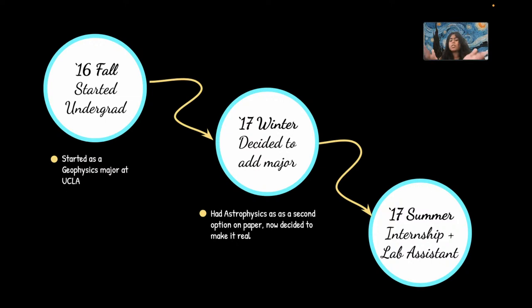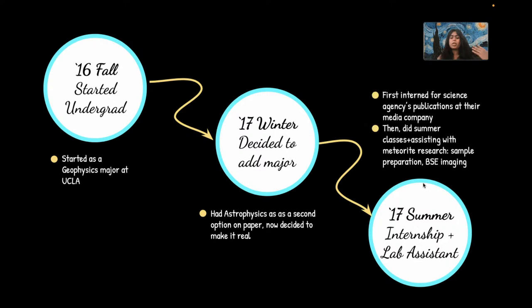In that term I added the major and started taking extra classes. The following summer I did an internship as a lab assistant — and importantly, it was not research-related at all. It's not mandatory that everything you do as an undergrad be research-based; you can pick up needed skills from somewhere totally different. I interned for a science publication, looking for new stories, interviewing people, and helping plan an event — I was getting communication and networking skills that are essential for scientists.